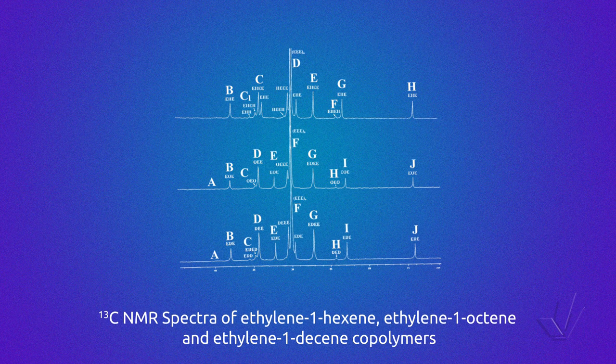In this slide, the integral areas for ethylene-1-hexene, ethylene-1-octene, and ethylene-1-decene are shown. Now we are going to see how to calculate the amount of comonomers, the number average sequence length, and the reactivity ratios of a copolymer using the equations shown in the table.